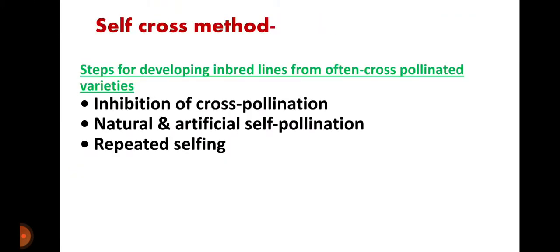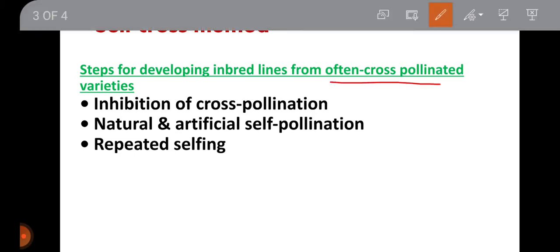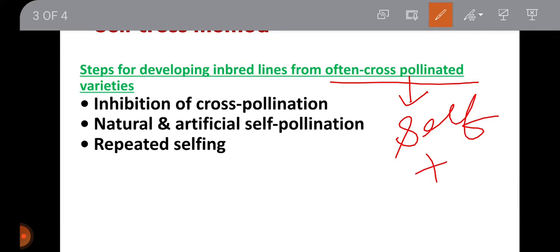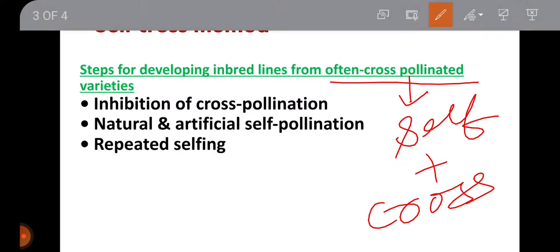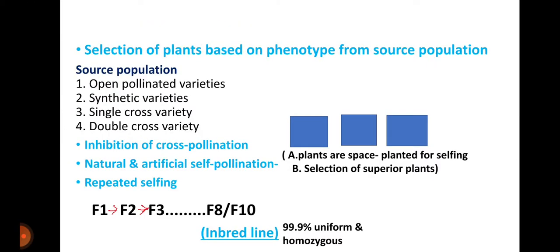The steps for developing inbred lines from often cross-pollinated varieties — crops with both self and cross pollination — are as follows: first, inhibition of cross pollination; second, natural and artificial self-pollination; and third, repeated selfing.